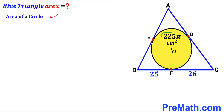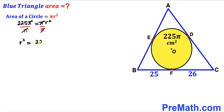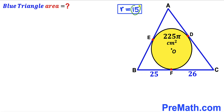The area of the yellow circle is given as 225π, so we set up 225π = πr². Dividing both sides by π, the π's cancel, giving r² = 225. Taking the square root of both sides, the radius r turns out to be 15 cm.